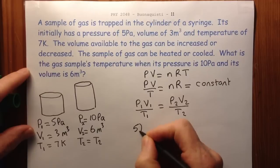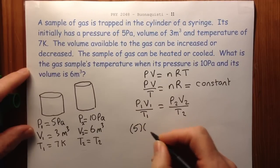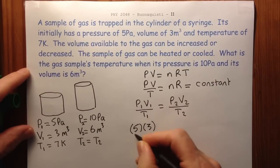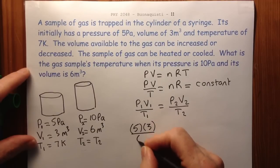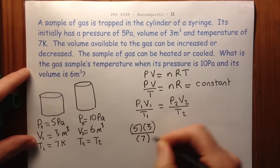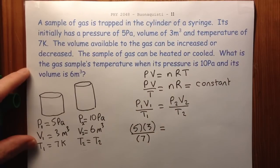So we say 5 times 3 divided by, and notice that the temperature is already in Kelvin, so I don't need to worry about changing it to the Kelvin scale.